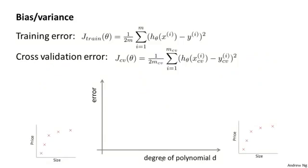Concretely, let's define our training error and cross-validation error as in the previous videos — just the squared error, the average squared error, as measured on the training set or as measured on the cross-validation set.